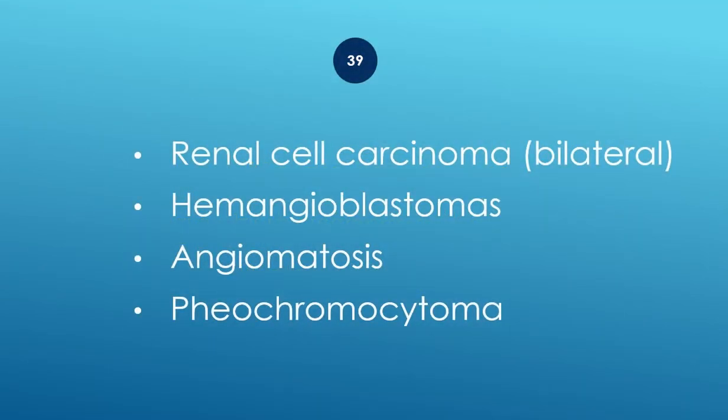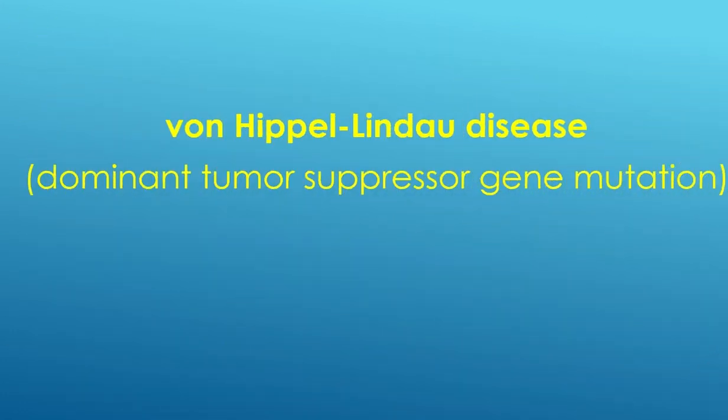Bilateral renal cell carcinoma, hemangioblastomas, angiomatosis, and pheochromocytoma — Von Hippel-Lindau disease, dominant tumor suppressor gene mutation.